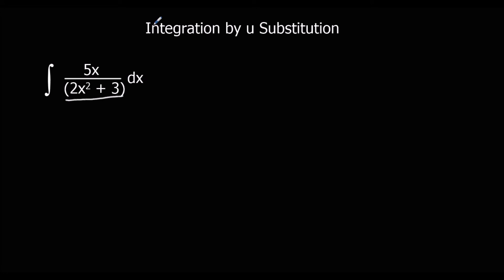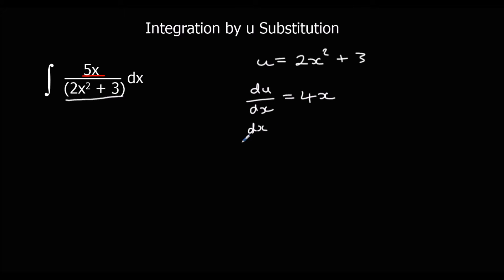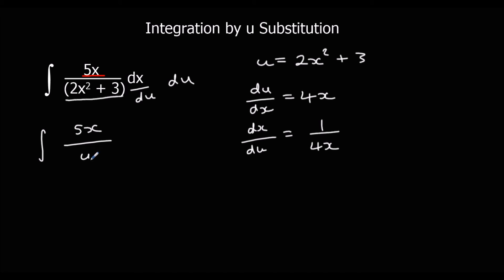Here's another question. We've got a function and something like its derivative — a multiple of the derivative, which is fine. We'll have u as 2x squared plus 3, which makes du/dx equal to 4x, and dx/du equal to 1 over 4x. We're going to integrate with respect to u, so we have the integral of 5x over u times 1 over 4x with respect to u. We simplify by cancelling the x's.